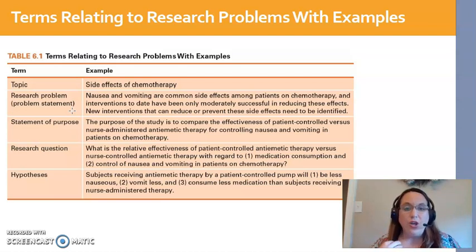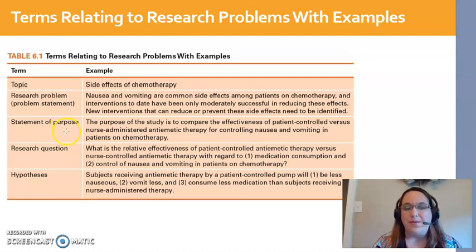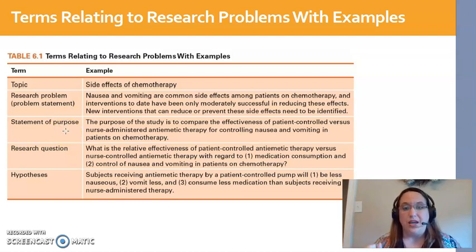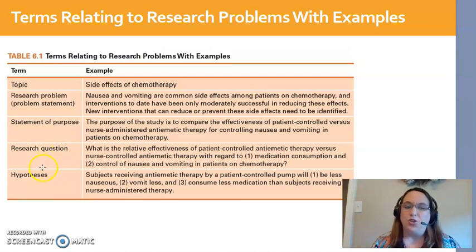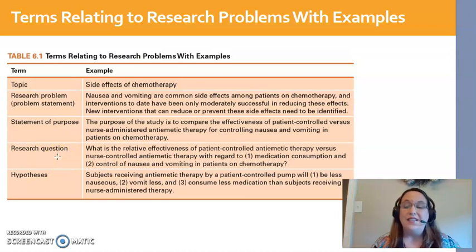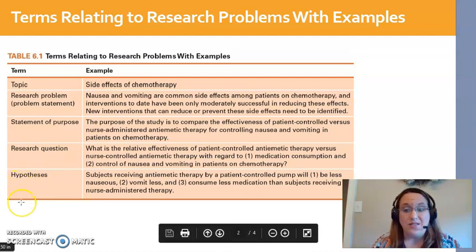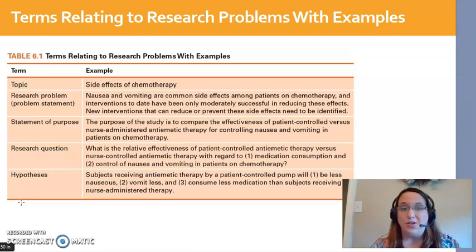After you've argued for the importance of the topic, you have a purpose statement, which tells us exactly what we hope to learn — why are we doing this research study or EBP project? The purpose of this study is to X, Y, Z. Then we have a research question — a PICO or PO question — written in a format that tells us exactly what we want to know the answer to. And then, if it's a quantitative study, we'll have a hypothesis or more than one hypothesis about what we think the answer to our research question will be.